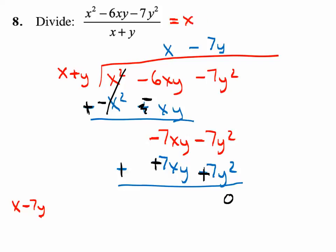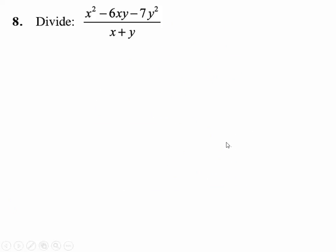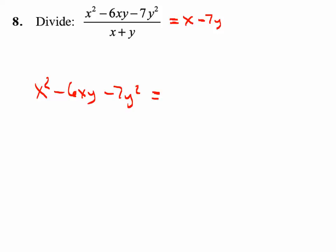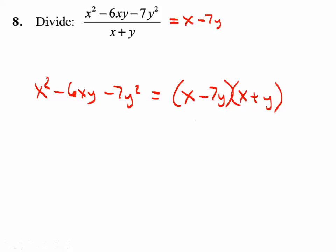Let me also verify this by factoring instead. Factoring the top portion only — in order to get x squared, factor as x plus y times x minus 7y. Now the x plus y on top and x plus y on the bottom cancel, leaving just x minus 7y.